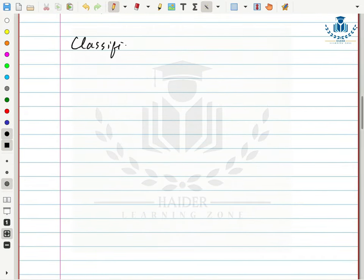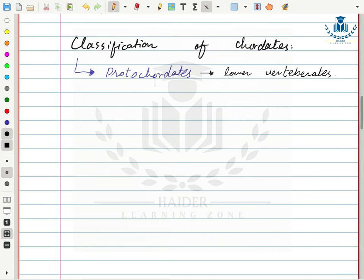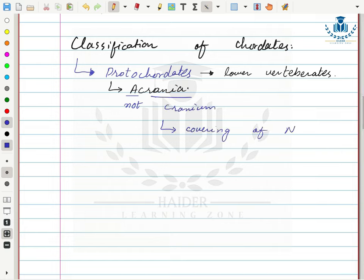These were the characteristics of chordates. Now we will discuss the classification of chordates. Chordates are classified into two groups: protocordates, also called lower vertebrates or acraniates, and craniates. Acrania means 'not having a cranium,' where cranium is the covering of the nervous system. Protocordates don't have a cranium covering their nervous system, while craniates do.